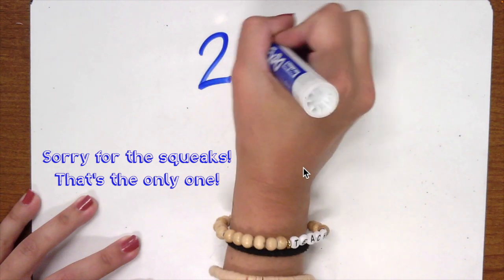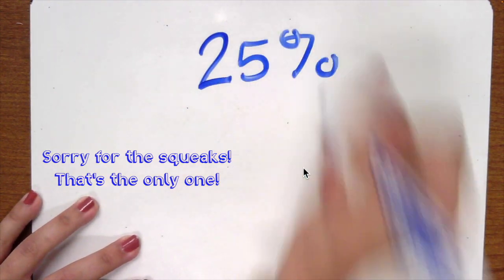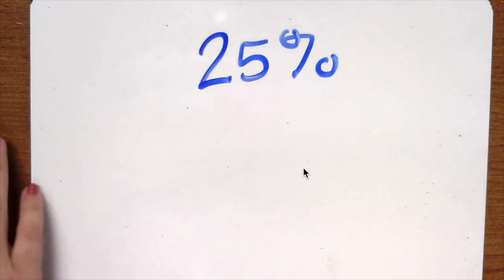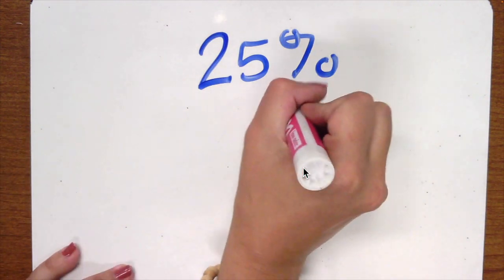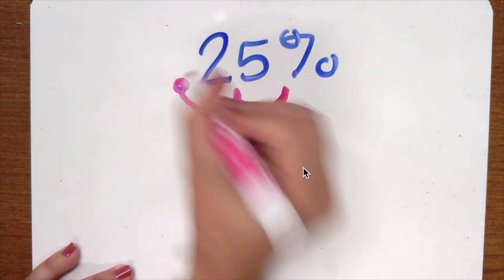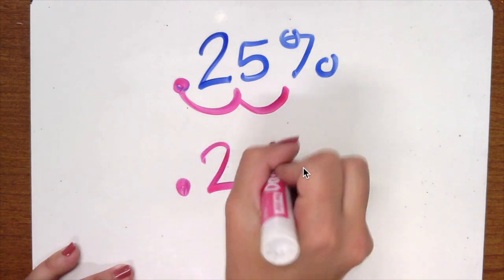So if I have something that is 25 percent and I want to make that a decimal, all I have to do is jump one, two spaces to the front and now my decimal is 0.25.